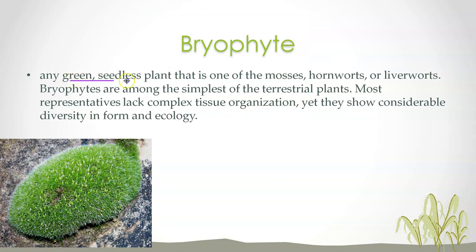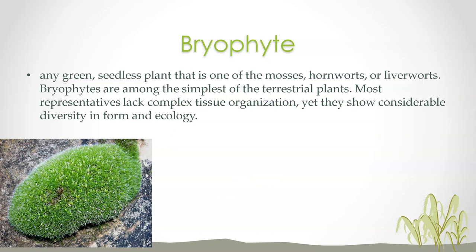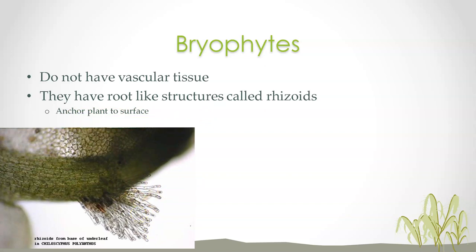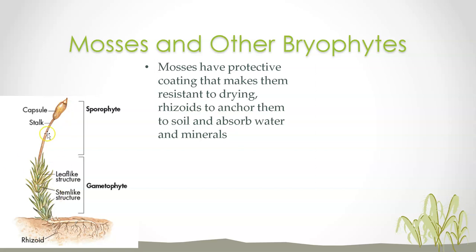Bryophyte is another term you need to know — any green seedless plant, either mosses, hornworts, or liverworts. They're the simplest of terrestrial plants and lack complex tissues. Think of them like a green shag carpet on the forest floor. How do they stay attached? They have rhizoids — microscopic root-like structures. They're not roots, but they anchor the plants to surfaces. You can see under a microscope how rhizoids anchor bryophytes to the surface they're growing on.